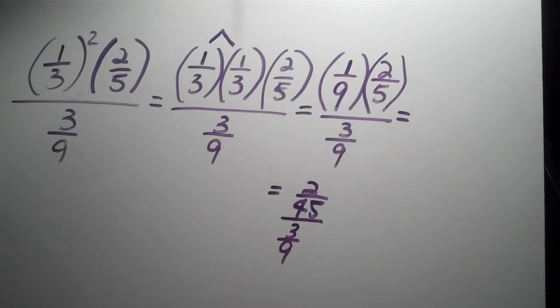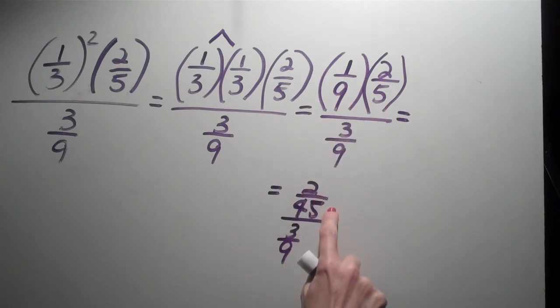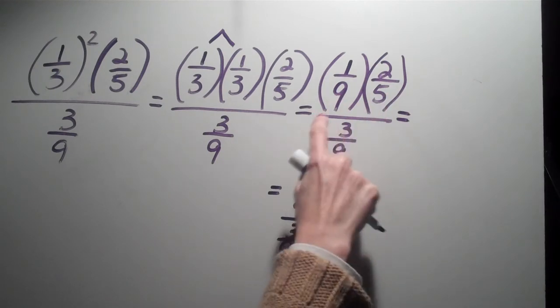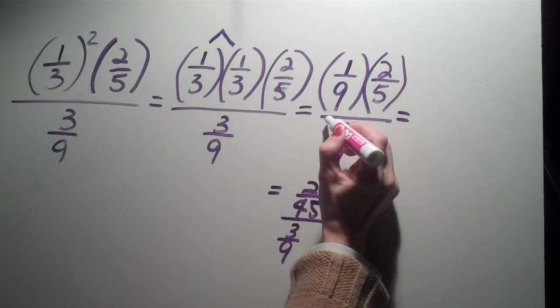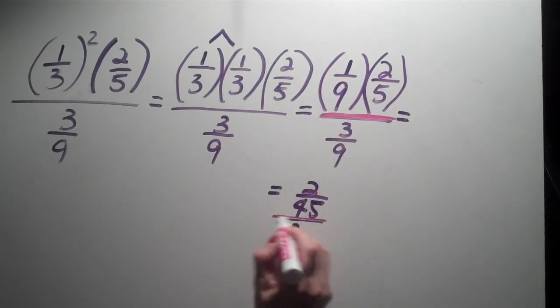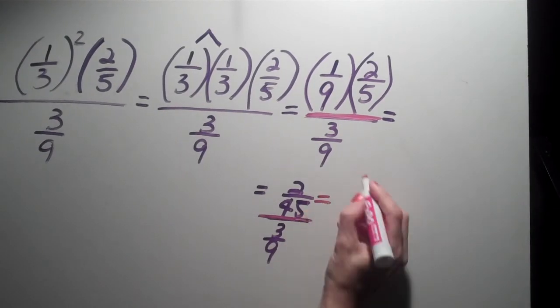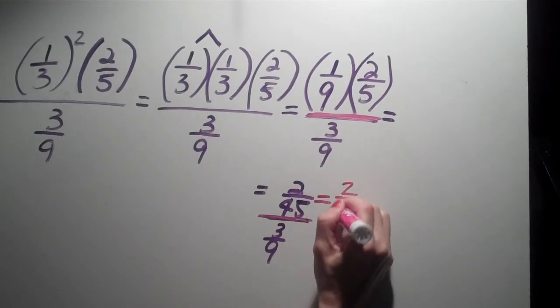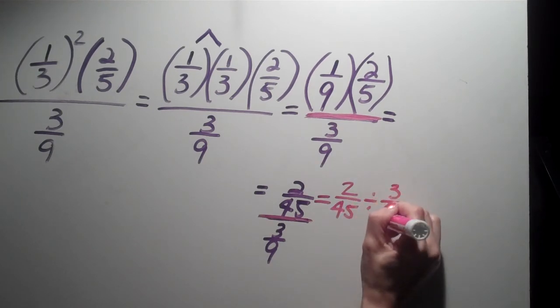Now I can rewrite this. 1 times 2 is 2, 9 times 5 is 45. That's how I got this. Divided by 3 over 9. That's what I did right here. So this sign right here, this line right here, is division right there. So that means this is division, right? And another way of writing this would be 2 over 45 divided by 3 over 9.